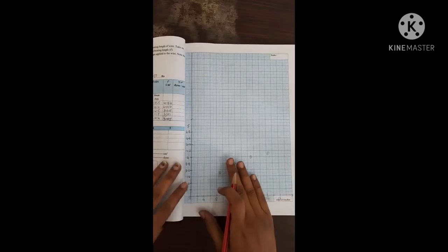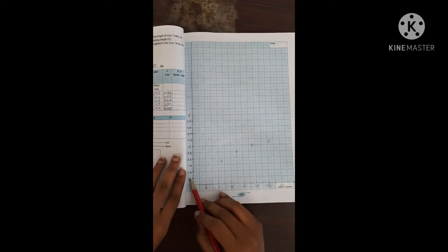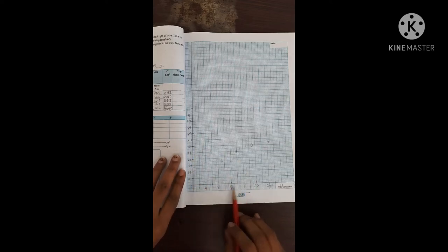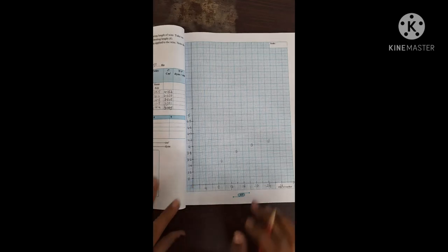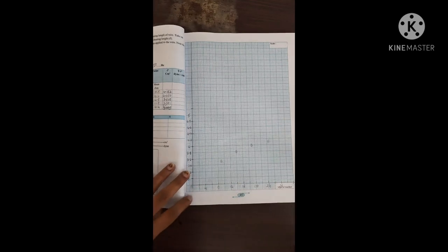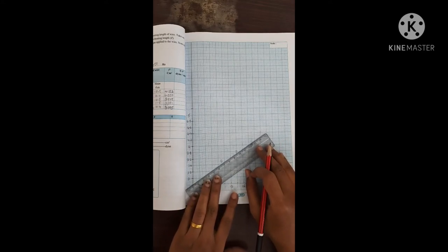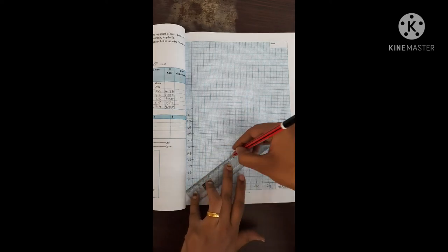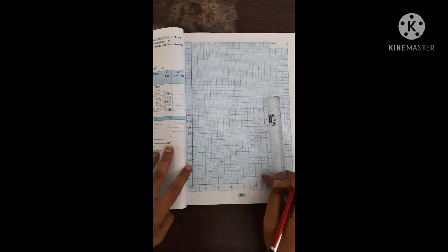Now see, I have drawn the graph. How I have drawn? I have drawn the series from 3 and 4, 4, 4, 4, stable I have drawn. So what you have to do, you have to just draw a straight line from here.